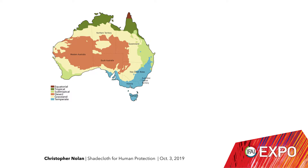Here we have Australia, described by one of our great poets Dorothy McKellar as a sunburned country — a very apt description. It's a very dry continent, with a large part being desert, shown in orange there.